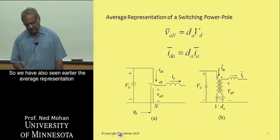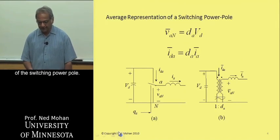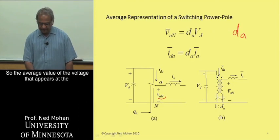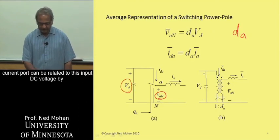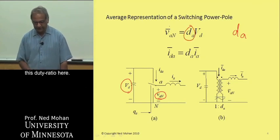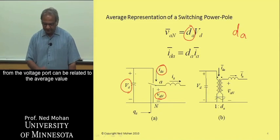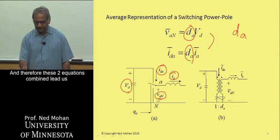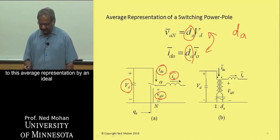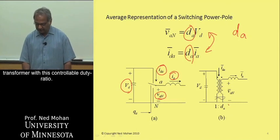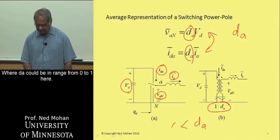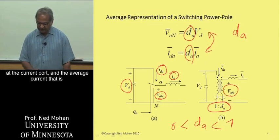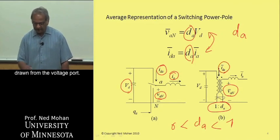We have also seen earlier the average representation of the switching power pole. For duty ratio DA, the switch is in the up position. The average value of the voltage that appears at the current port can be related to this input DC voltage by this duty ratio. Similarly, the average value of the current that flows from the voltage port can be related to the average value of this current by this duty ratio. These two equations combined lead us to this average representation by an ideal transformer with a controllable duty ratio, where DA could be in a range from 0 to 1.